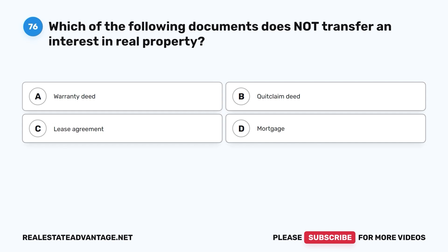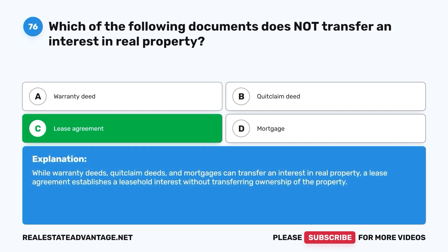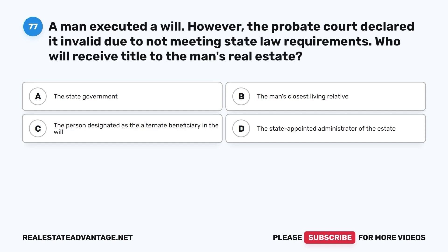Question 76: Which of the following documents does not transfer an interest in real property? A. A warranty deed. B. Quit claim deed. C. Lease agreement. D. Mortgage. The correct answer is C, lease agreement. While warranty deeds, quit claim deeds, and mortgages can transfer an interest in real property, a lease agreement establishes a leasehold interest without transferring ownership of the property.